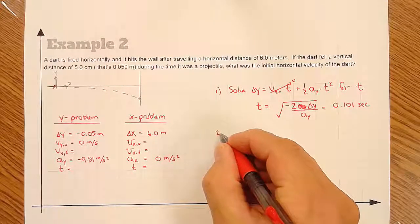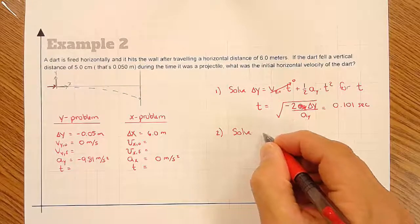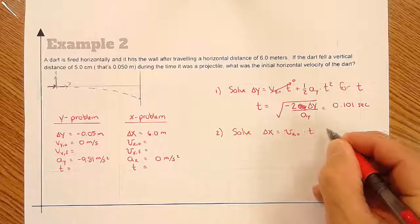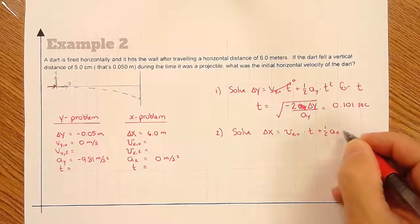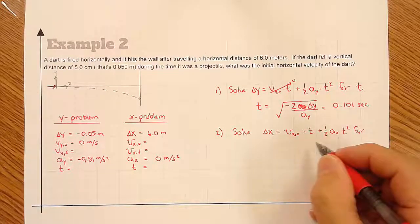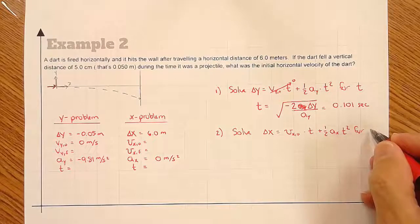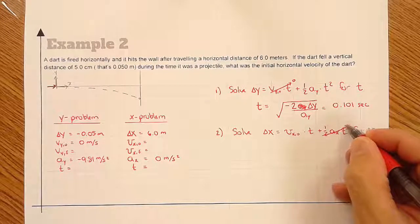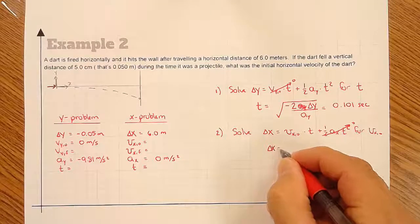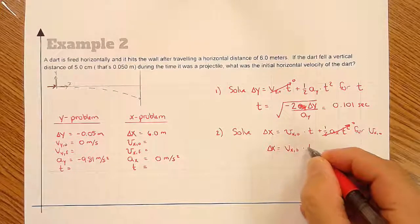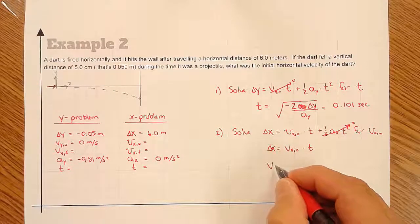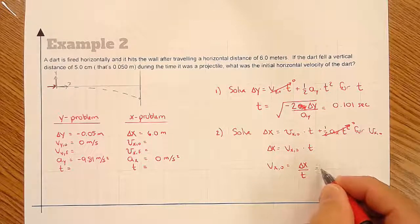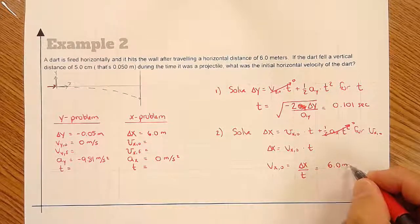Our second step is to solve the x problem: delta x equals the initial velocity in the x direction times time, plus one half the acceleration in the x direction times time squared. Because the acceleration in the x direction is zero, that simplifies to delta x equals the initial velocity in the x direction times time. Solving for the initial velocity in x: it equals delta x divided by time. Delta x is 6.0 meters.